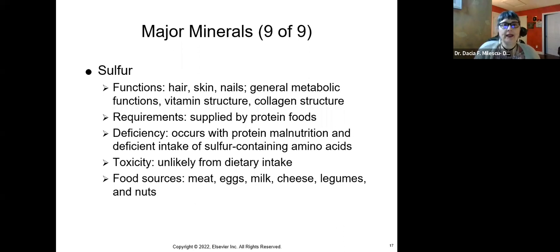Next one is sulfur. We can use sulfur for our hair, nails, and skin. It is involved in general metabolic function, vitamin structure, and collagen structure. The normal collagen does have, you know, collagen molecule does have, the collagen fibers does have sulfur. Where do you get it from? Protein foods, deficiency. If you have a protein malnutrition, you're going to have a decreased sulfur. Toxicity, unlikely from just dietary intake. Where do you get sulfur from? Well, you know, the rotten egg smell. There's a reason for it, and it is sulfur. So you get it from eggs, meat, cheese, milk, legumes, and nuts.